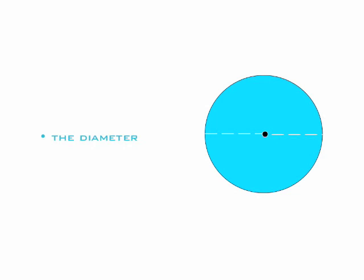Also, you need to know the diameter. The diameter is a straight line passing through the center of the circle and meeting the circumference at each end.